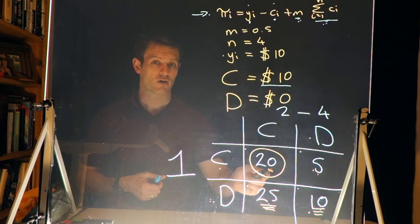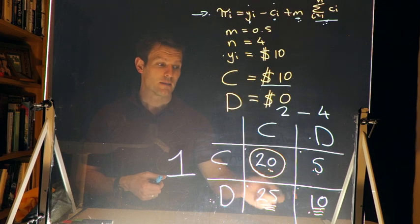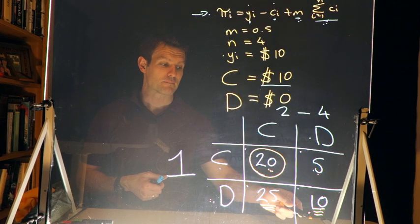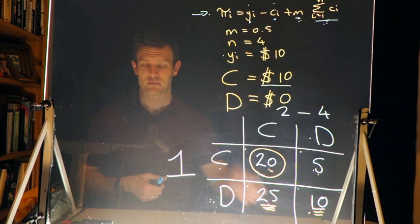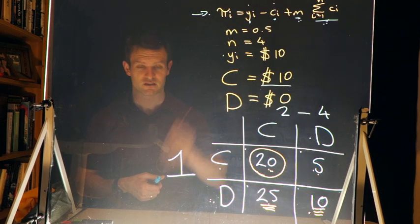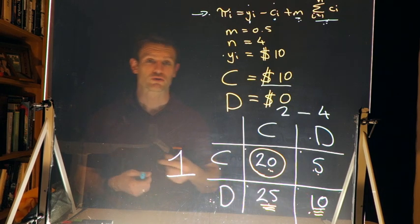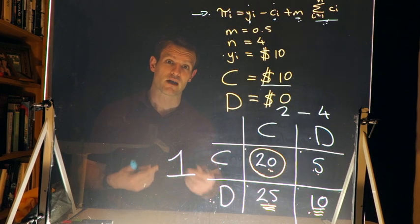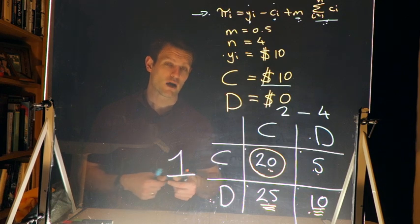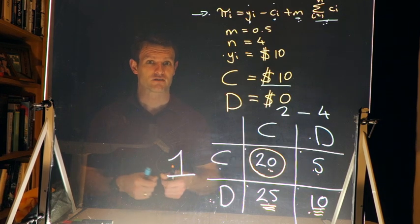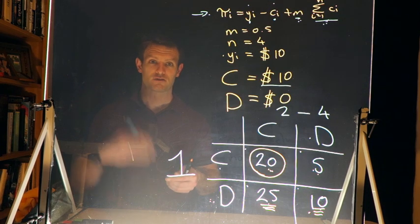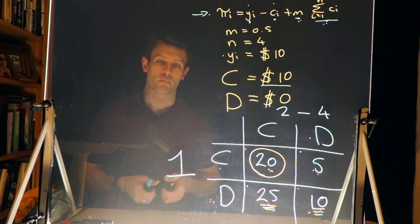However, as we see in the papers we're reading, people regularly contribute substantial amounts, even though the self-interested outcome predicts zero contribution. We'll also see how this differs among groups — people often start contributing but contributions decline if the game is repeated. And in another set of experiments, adding a punishment mechanism leads to greater cooperation.